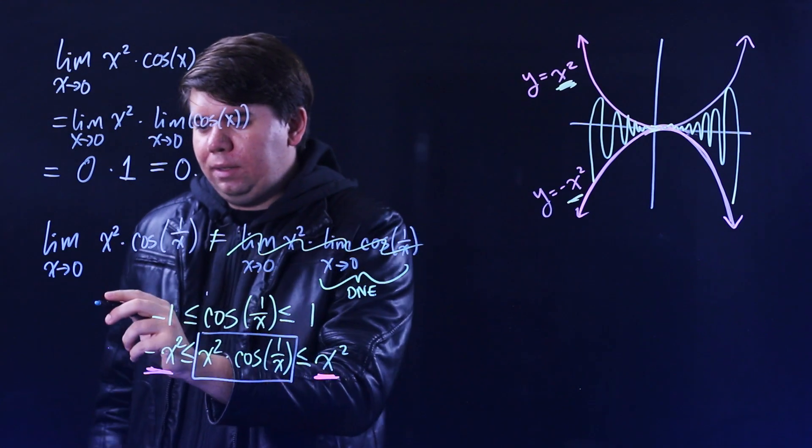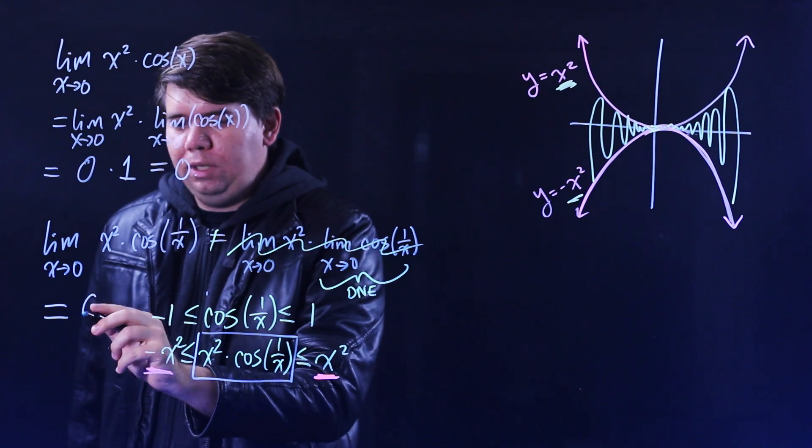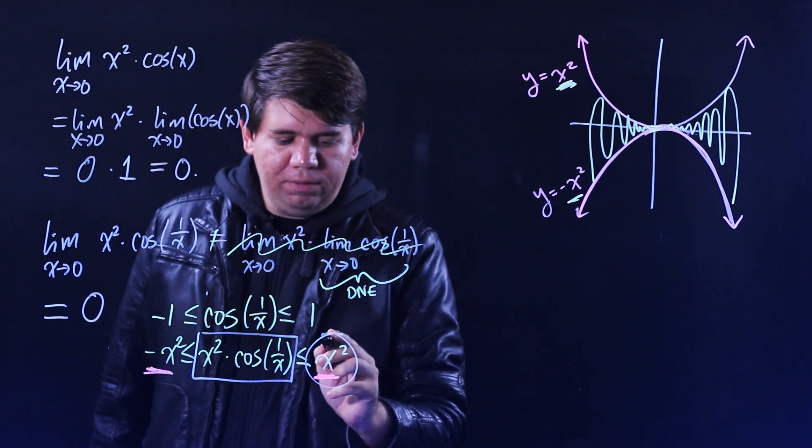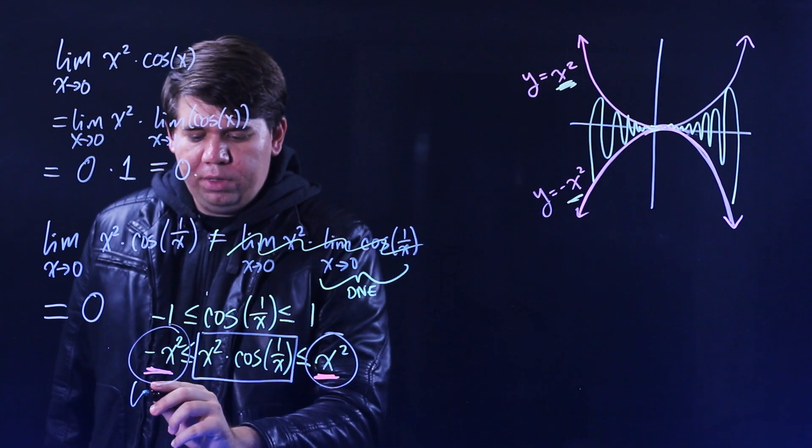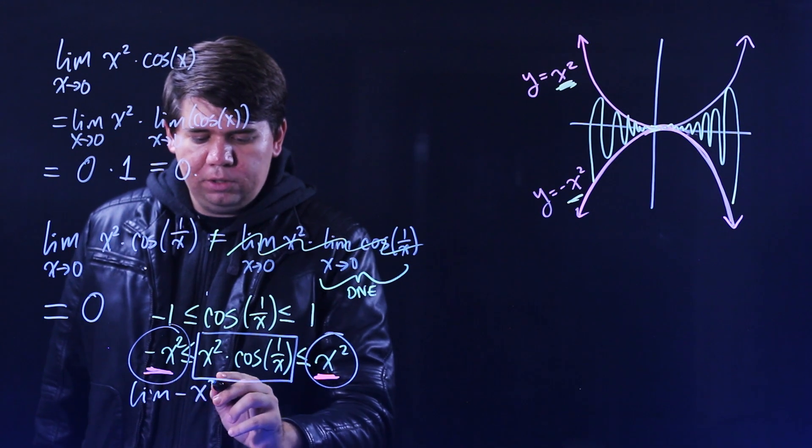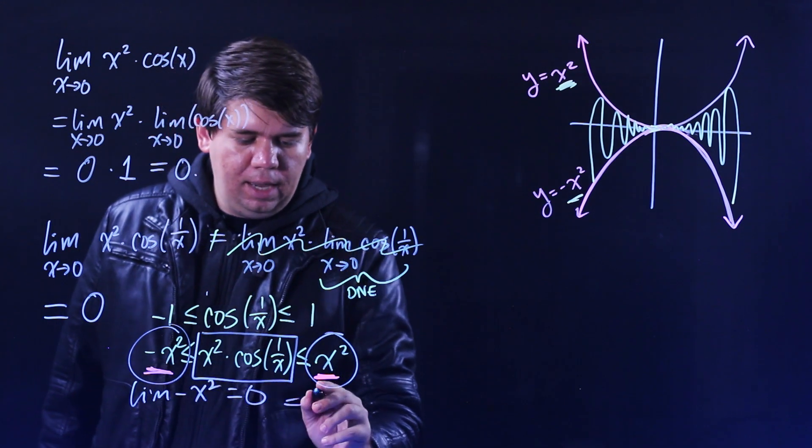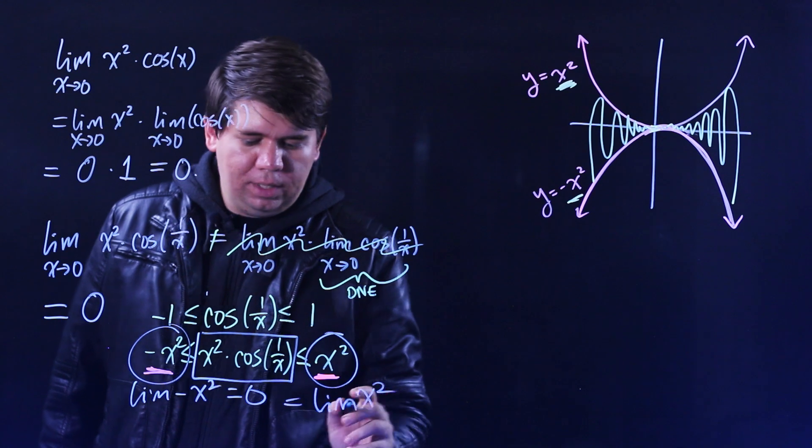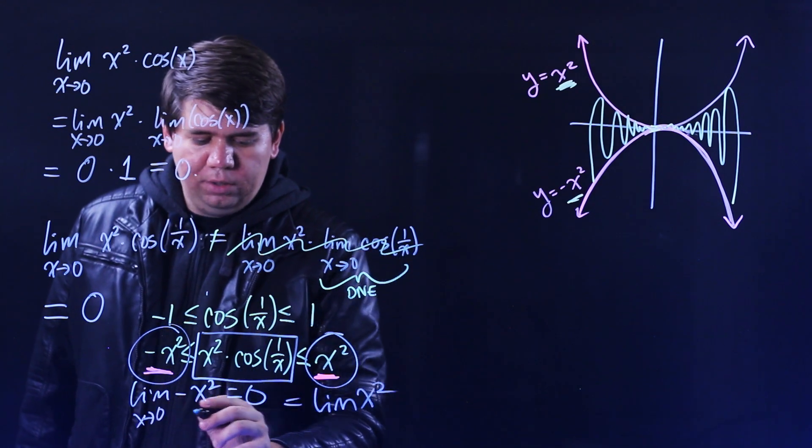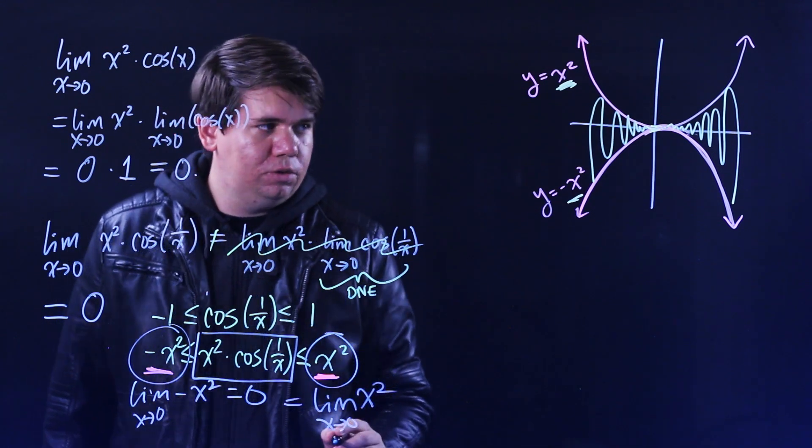That is, this limit must be equal to zero because both of these are going to zero. Both the limit of minus x squared is going to zero and the limit of x squared is going to zero as your x goes to zero.